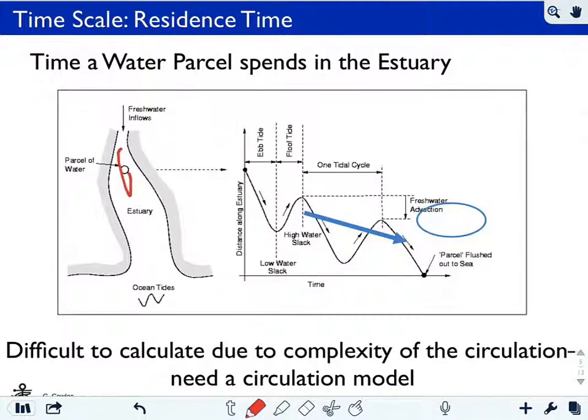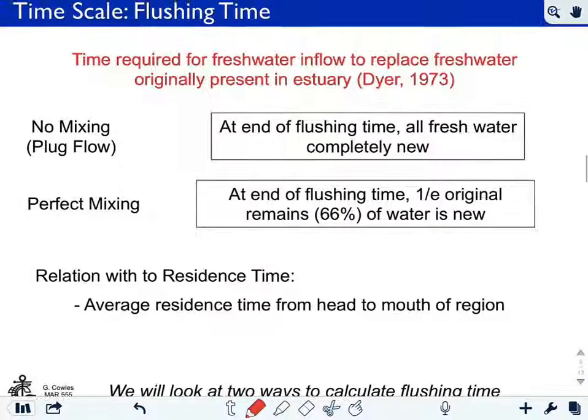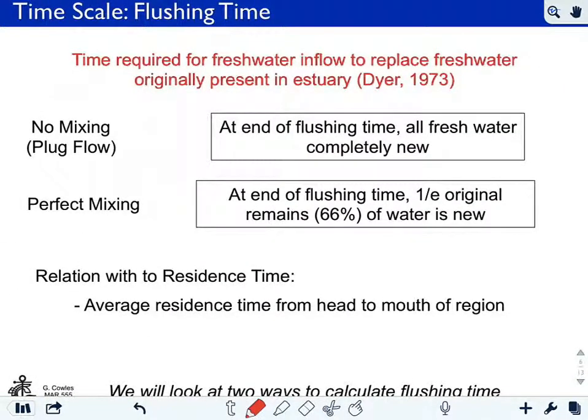As these parcels make their way out of the estuary, they're riding the ebb and flow of the tide. So essentially they're oscillating back and forth and making their way in the net downstream. It'd be better to have means of estimating flushing time that don't require a numerical model that may not be as accurate but are far simpler to get at, and we're going to look at two methods of that in this lecture.